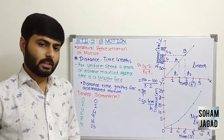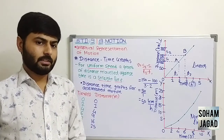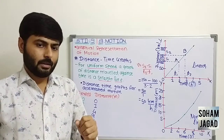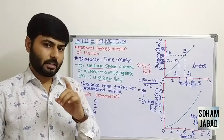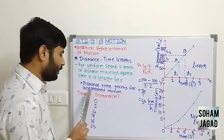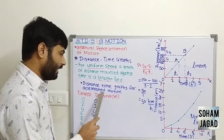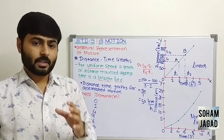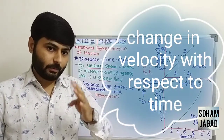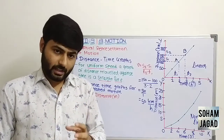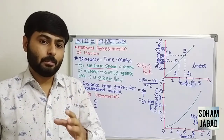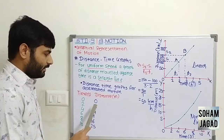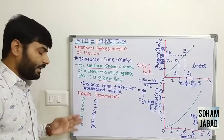We have discussed the graph for uniform speed. Now let us discuss the graph for non-uniform speed. We will refer to this as the distance-time graph for accelerated motion. We know that acceleration is change in velocity with respect to time, so for accelerated motion, velocity must change. In this case, distance is not constant in every time interval.